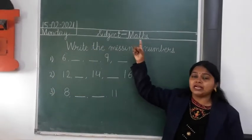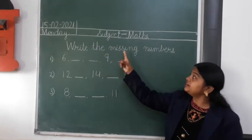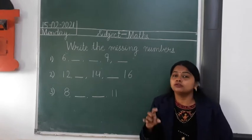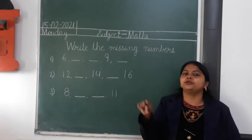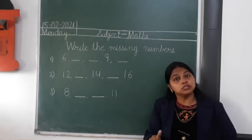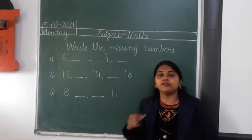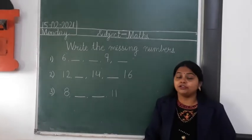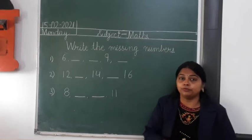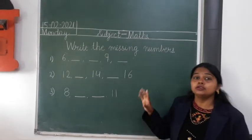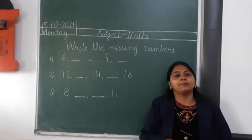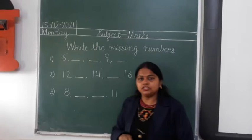Our subject is Math. Today we will write the missing numbers. You have to write the missing numbers. You all know the counting from 1 to 100. You all know the backward counting from 20 to 1 that you have already done. Even 20 to 0 you have done in your Math. Now today we will do the missing numbers. I will explain on this board, after that you have to complete one page of your fun sheet book.